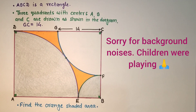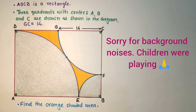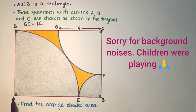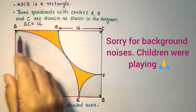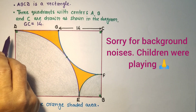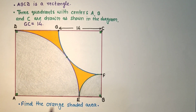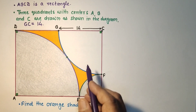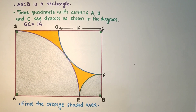Hello everyone, welcome to my channel. In this question we are given that ABCD is a rectangle and these three quadrants are touching according to the diagram given.